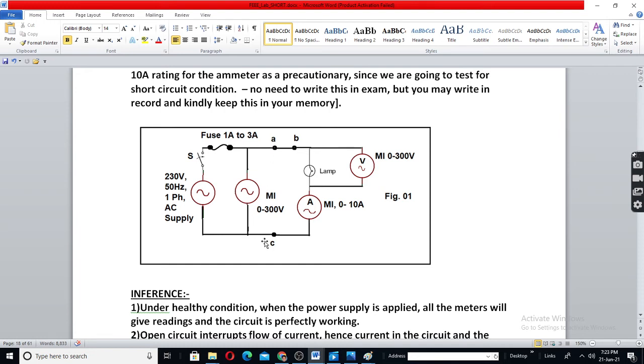What will happen is, as soon as we short between A and C, either here or here, voltmeter reading will become 0.